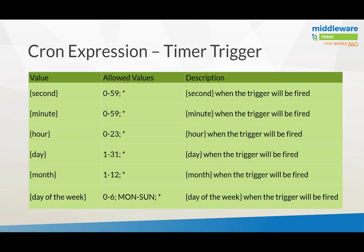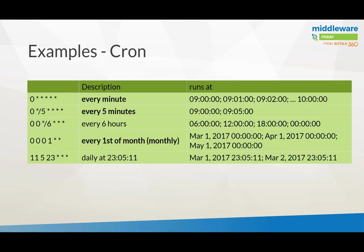In general, with a timer trigger in any of these services, you use a cron expression — at least for a Function or a Web Job. The expression fields are: seconds, minutes, hour, day, month, and day of the week. There are various examples — you can run them every minute, every five minutes, or monthly. There are various ways you can use a cron expression to schedule a trigger.